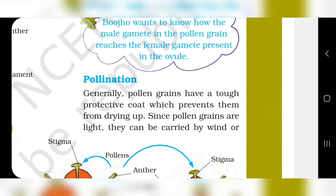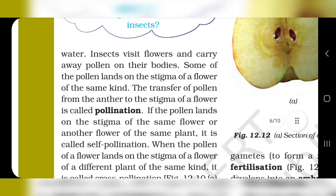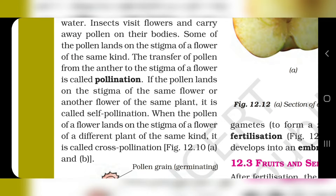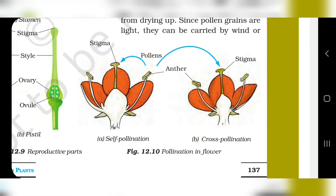Now let's come to pollination. Pollen grains are light and they are carried by wind and water. Insects visit flowers and transfer pollen. When pollen lands on the stigma of the same flower or another flower of the same plant, it is self-pollination. When pollen lands on the stigma of a flower of a different plant of the same kind, it is called cross-pollination. We can see self-pollination and cross-pollination in figure 12.10.